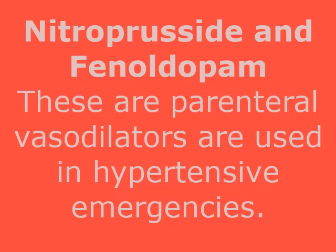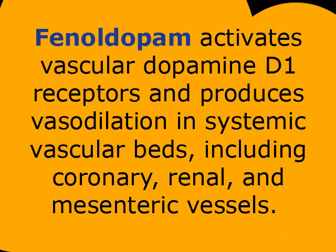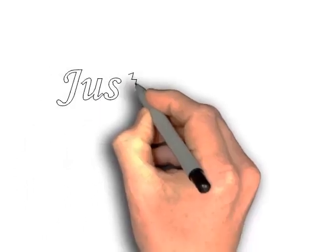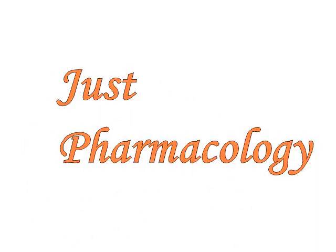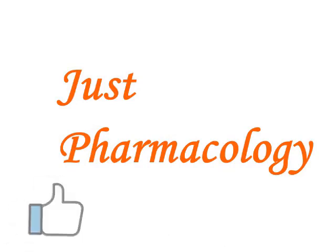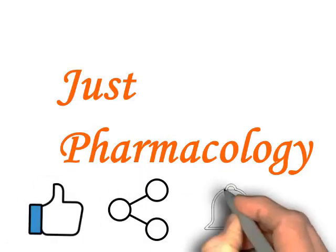Nitroprusside and fenoldopam are parenteral vasodilators used in hypertensive emergencies. Nitroprusside is short-acting and infused continuously, producing vasodilation by release of nitric oxide. Fenoldopam activates vascular dopamine D1 receptors, producing vasodilation in systemic vascular beds including coronary, renal, and mesenteric vessels, with a short duration of action. This is the rapid review of antihypertensives — for informative videos regarding pharmacology, do not forget to like, share and subscribe the channel.